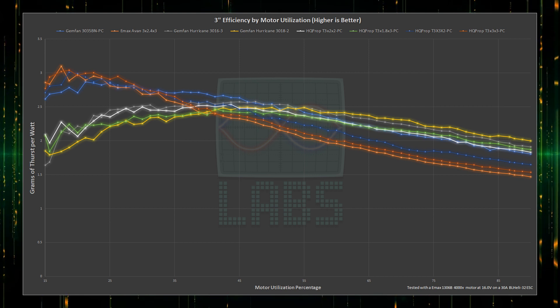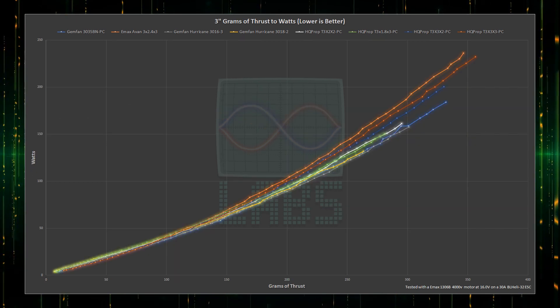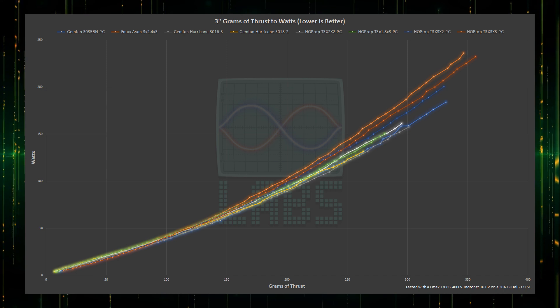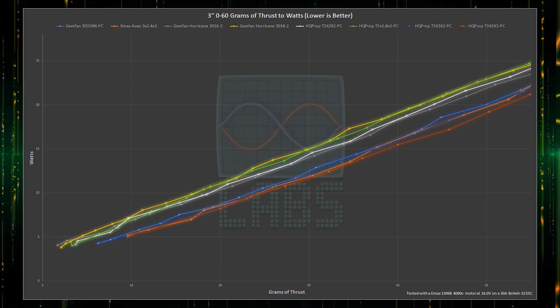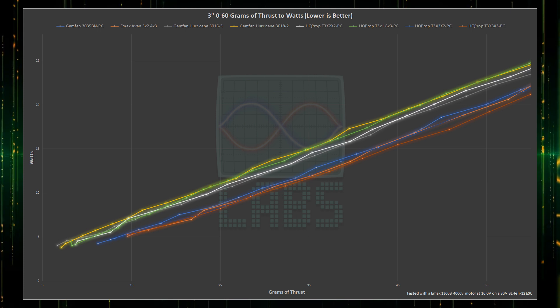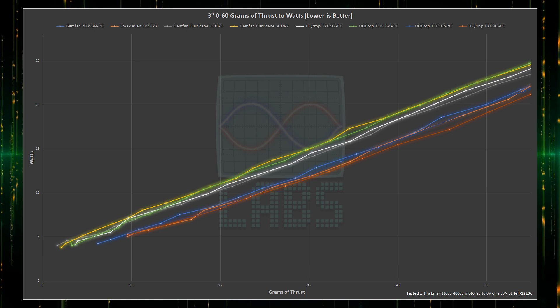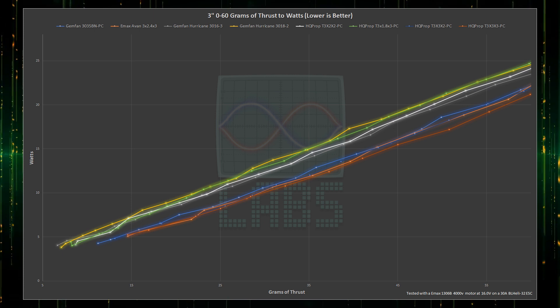Next comes the most important results directly comparing the amount of thrust generated by watts of power. This is a bit of a mess and I think we need to break this apart into individual segments. Looking at the first 60 grams of thrust or about hover for a typical sub 250 gram quad we clearly see the HQ prop 3-blade 3-inch pitch propeller in the lead alongside the more aggressive propellers in line with our previous analysis. The heads-up HQ prop 3-blade 1.8-inch pitch propeller ties with the HQ prop 2-blade 2-inch pitch propeller as the worst in efficiency.